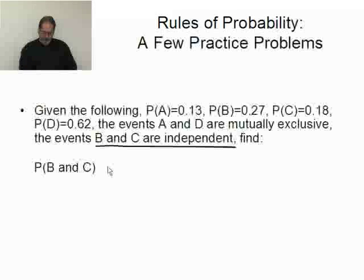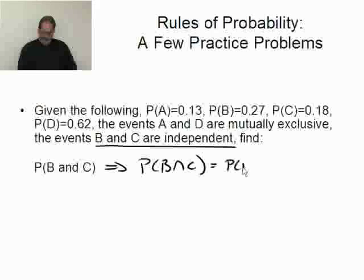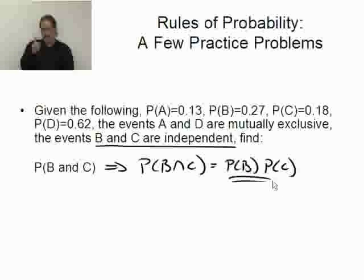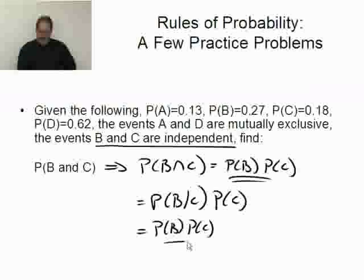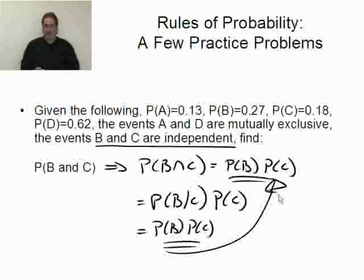Because they're independent, we know this is the probability of B and C. Because they're independent, this just equals the probability of B times the probability of C. Now, I'm going to go back and rewrite this. Yeah, I'll leave that there for a second. Using the general multiplication rule, this would be equal to the probability of B given C times the probability of C. That's what the general multiplication rule says. But, because we know they're independent, probability of B given C, because they're independent, is just the probability of B. And that brought me right back to what I first went to.